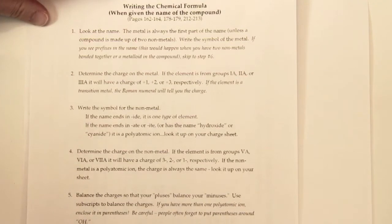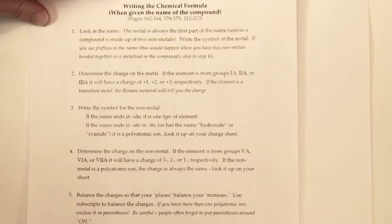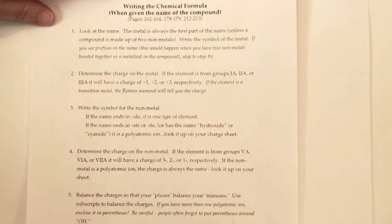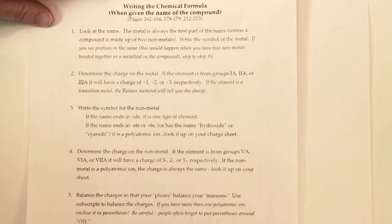Today we're going to be learning how to write the chemical formula for something when you're given the name of a compound. If you're given the name in words, like if someone told you sodium chloride and you had to figure out that that was NaCl, how would you do that? There's a set of rules that you'd follow — one set for ionic compounds and one for covalent compounds. We'll just look at the ionic ones first.